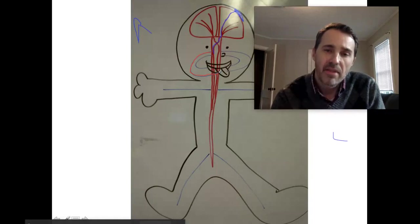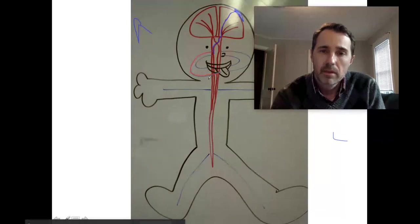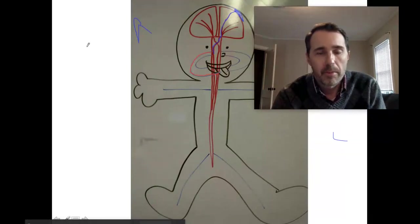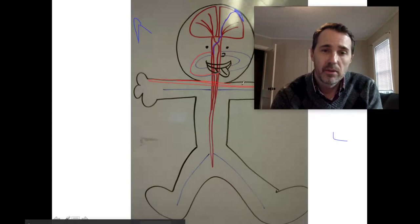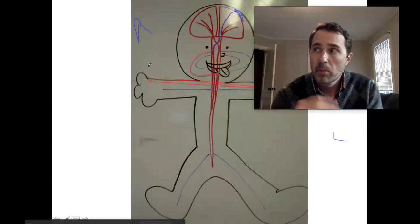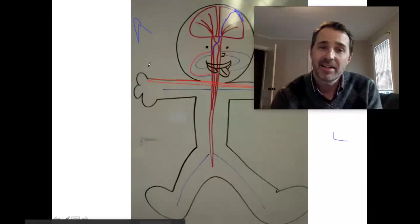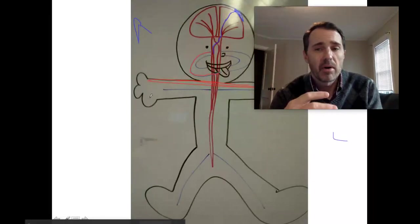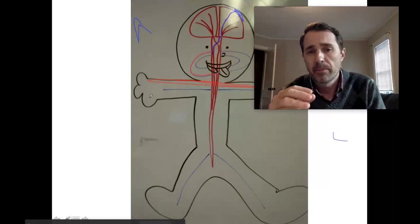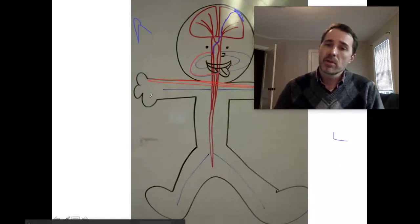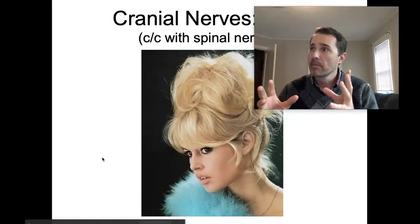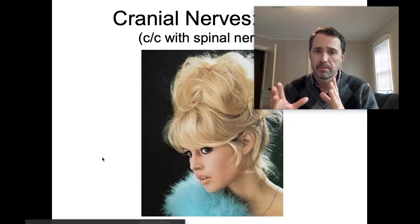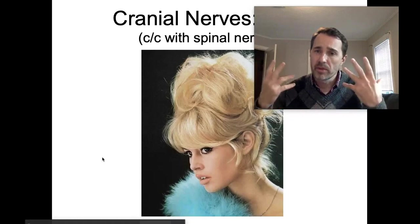In this case we're talking about the hypoglossal nerve. The peripheral nervous system is divided into that part which services your head and neck — those are your cranial nerves — and that part which services the rest of your body — those are your spinal nerves. So now we're getting into the cranial nerves, which is that part of the peripheral nervous system associated with your head and your neck.